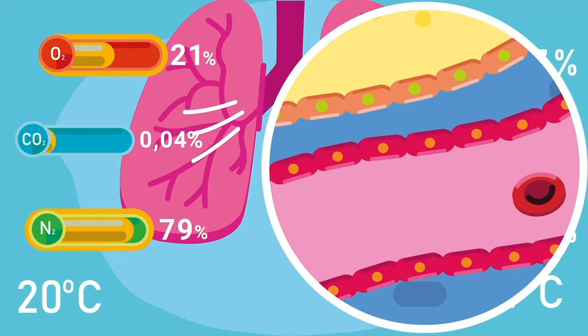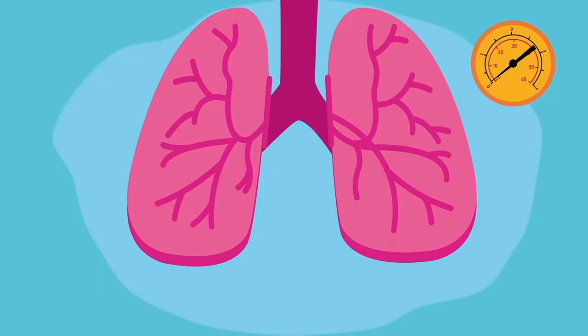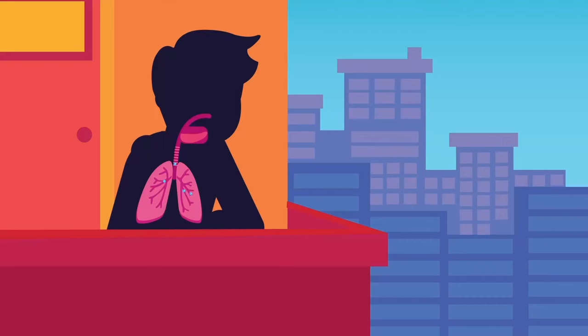During expiration, internal intercostal muscles contract, ribs swing downward and inward, and the diaphragm relaxes and elevates. There is a reduction in the volume of the thoracic cavity. A reduction in the thoracic cavity volume increases air pressure. This forces air out of the lungs to the atmosphere.